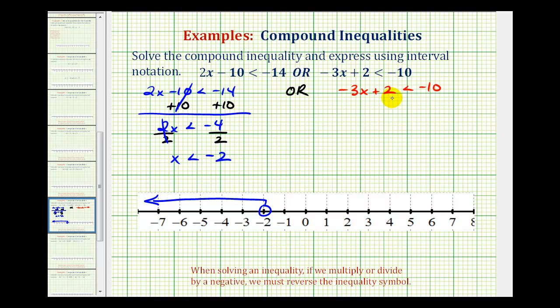And now we'll go ahead and solve the second inequality. So we'll start by subtracting 2 on both sides of the inequality. This would be zero, so we have negative 3x is less than, this would be negative 12.